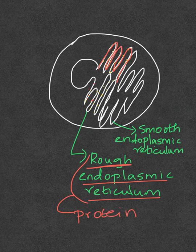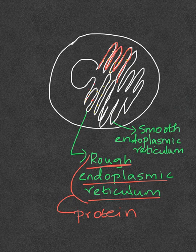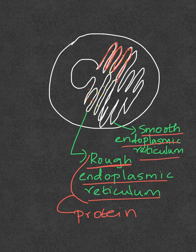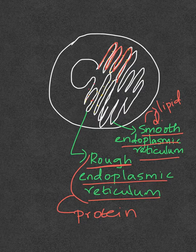The endoplasmic reticulum that does not have ribosomes attached to it is called the smooth endoplasmic reticulum. It has a major role in lipid synthesis and detoxification function.